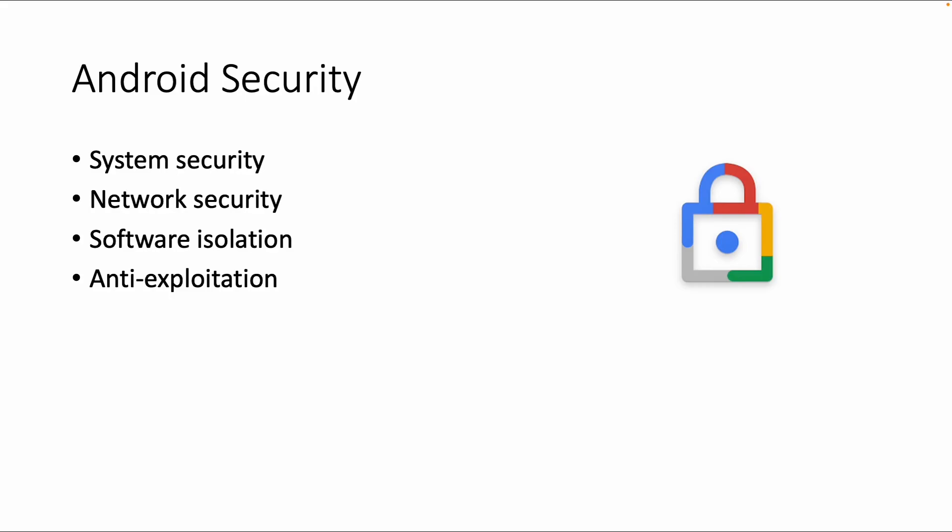Welcome back. Let's talk about Android security. Android is by default an open operating system. It's open source, compared of course to iOS which is closed source. But there are a lot of different security measures within Android. We will cover the following topics: system security, network security, software isolation, and anti-exploitation.